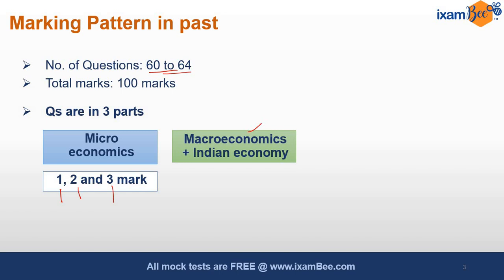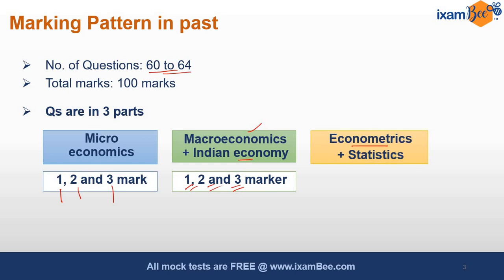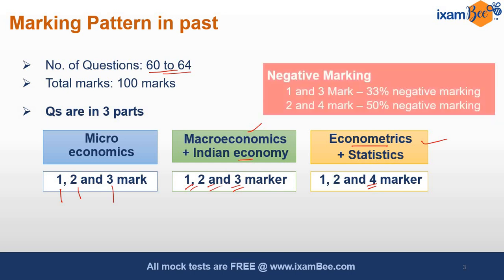Macroeconomics focuses mainly on the Indian economy but also covers global developments — questions of 1 mark, 2 marks, and 3 marks. There are also questions on econometrics and statistics, and there are 4-mark questions with numericals. For 1-mark and 3-mark questions, the negative marking is 33%. Surprisingly, for 2-mark and 4-mark questions, it is 50% negative marking.